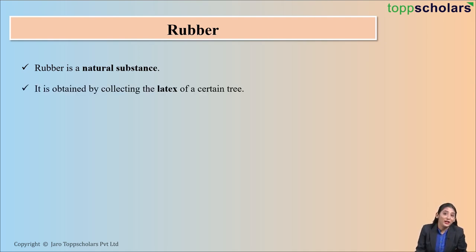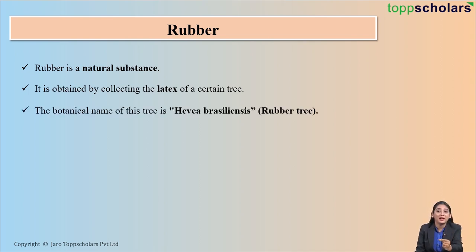Yes, rubber is obtained from something called latex. This latex is obtained from a tree which is named Hevea brasiliensis, commonly called the rubber tree. This tree is abundantly found in Brazil, but do you know where the maximum production of rubber in India takes place? Yes, it is in the state of Kerala.